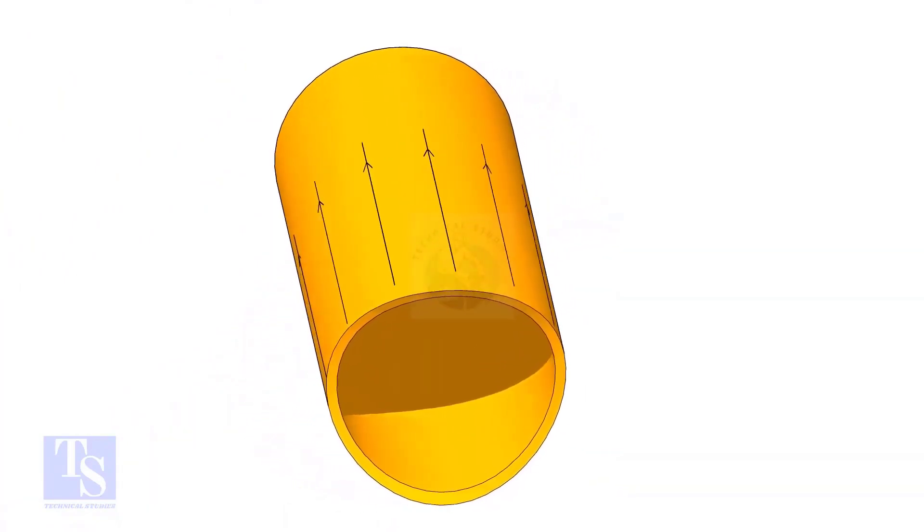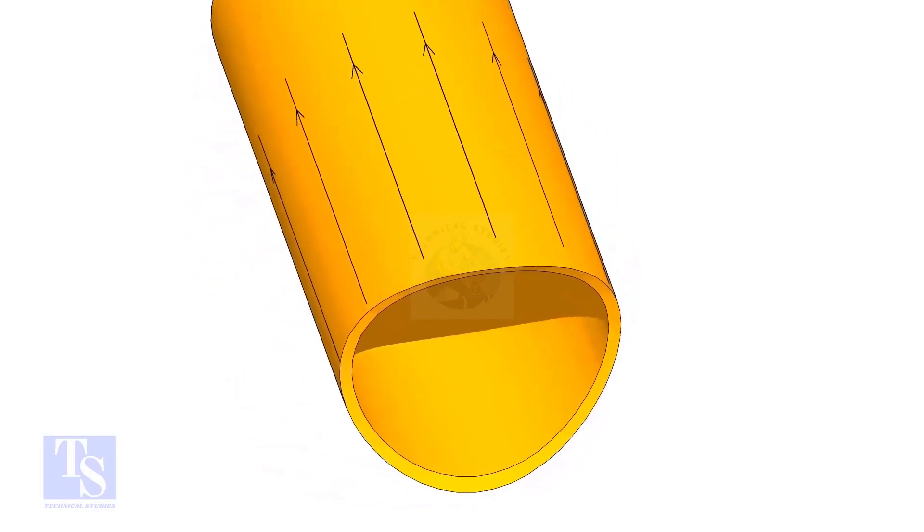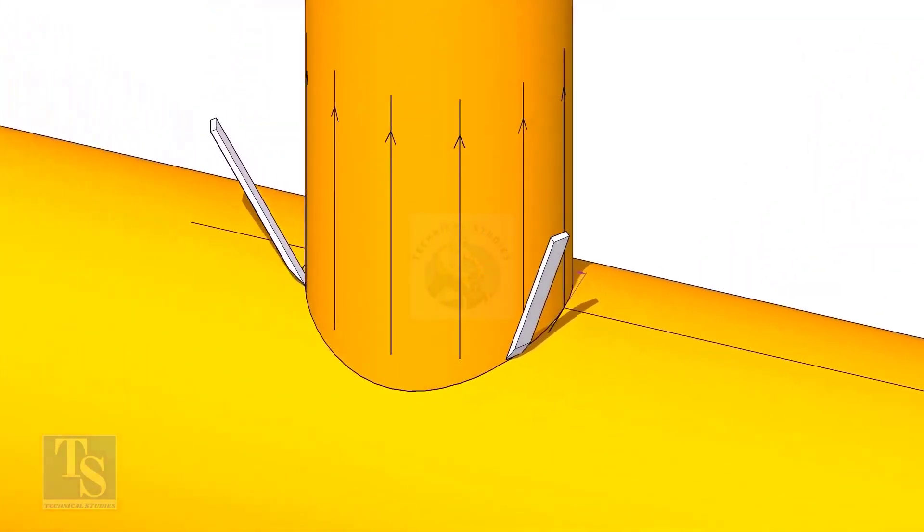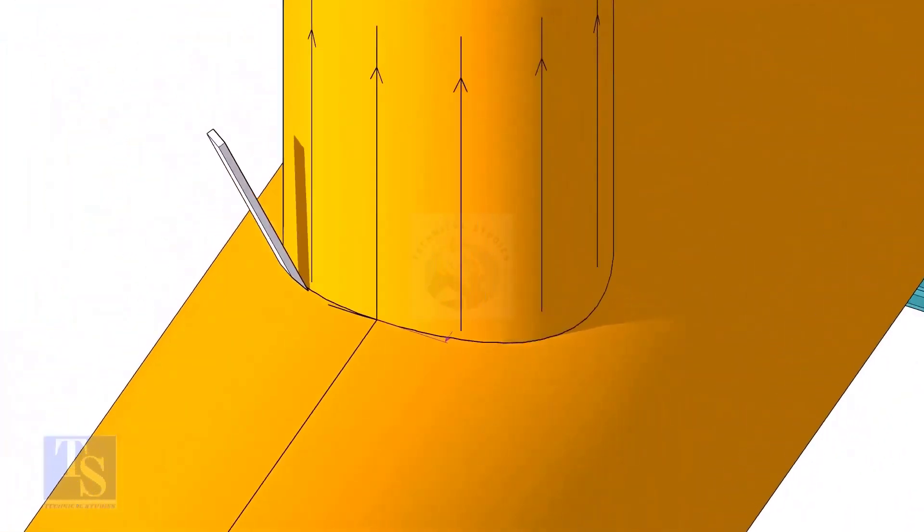After cutting and grinding the notch on the branch pipe, put it on the header. Make sure it is exactly in its position and mark the opening on the header as shown.